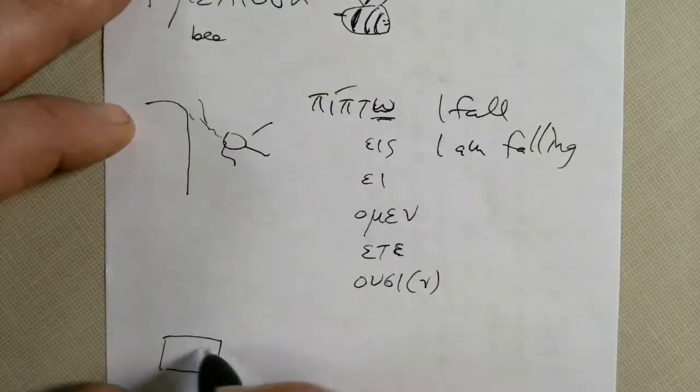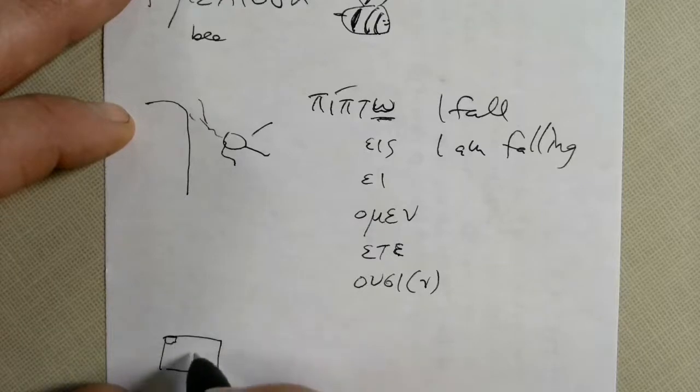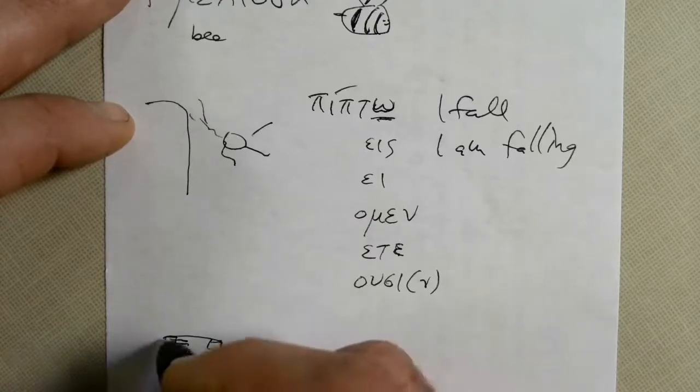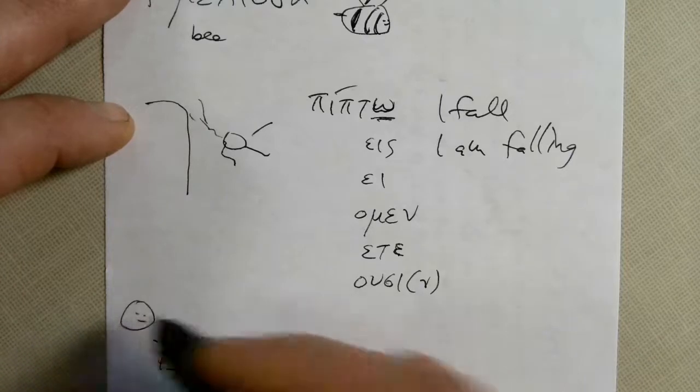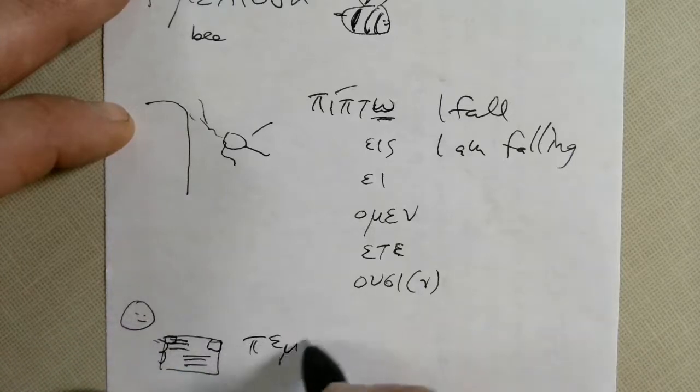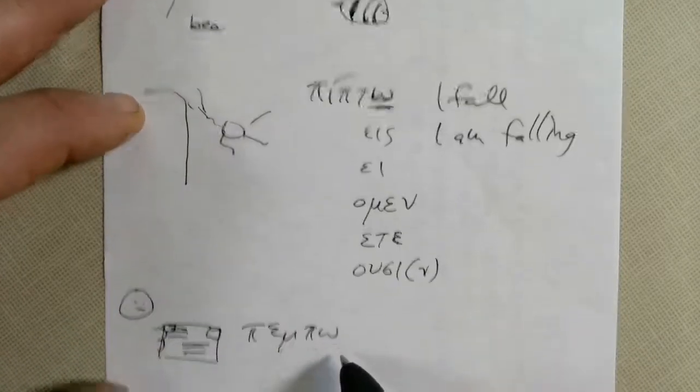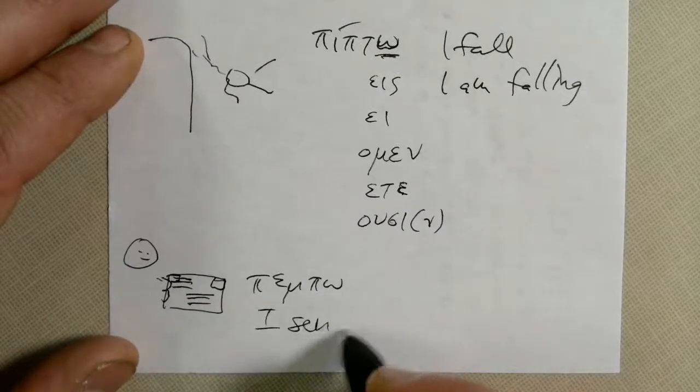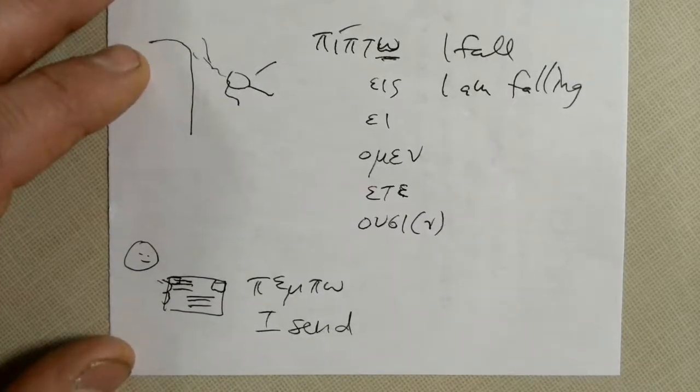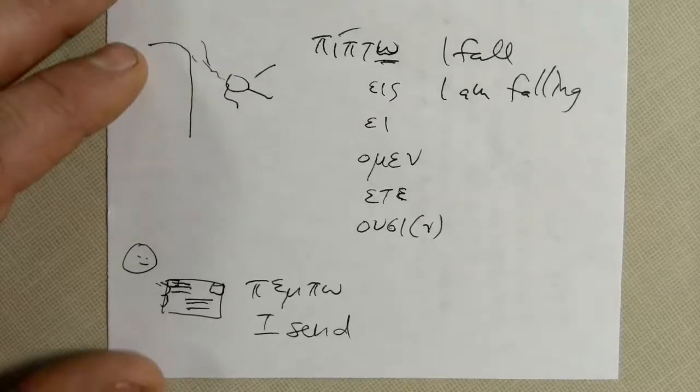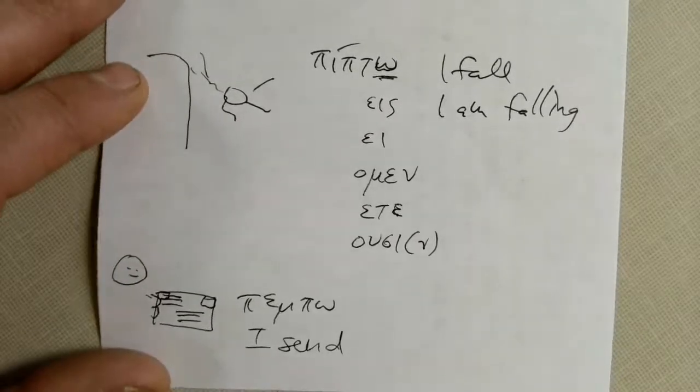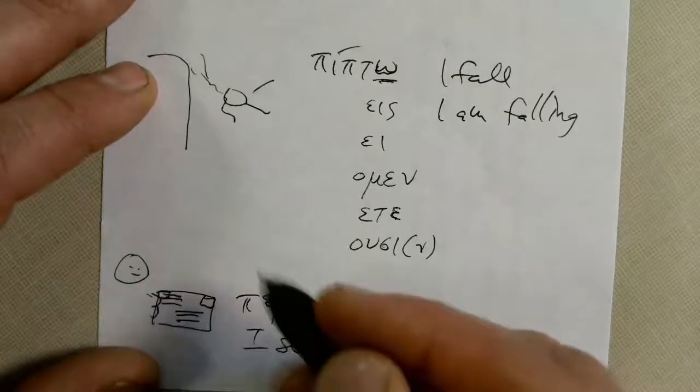Same thing with this other one. This is a letter with a little stamp. I mean the stamp goes over here, that's the return address, the regular address. Here's this guy holding it and he is Pimpo. I am sending, I send. Pimpo means I send or I am sending and it has the same kind of endings as pipto and echo and trecho. Pimpo means I send.